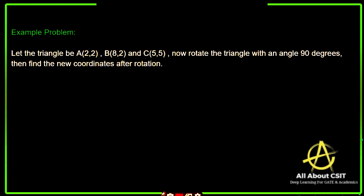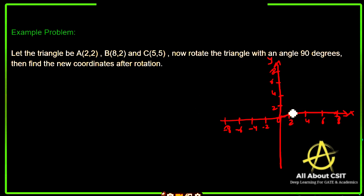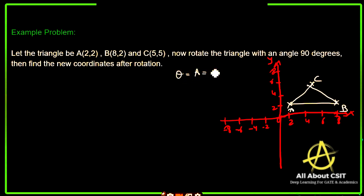Let's consider an example. The old triangle coordinates are: A(2, 2), B(8, 2), and C(5, 5), plotted on a 2D plane with x-axis values 0, 2, 4, 6, 8 and y-axis values 2, 4, 6, 8. We want to rotate the triangle by theta = 90 degrees. Find out the new coordinates.